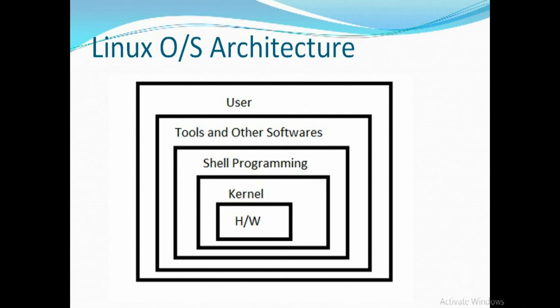Let's observe the Linux operating system architecture. We can see hardware, then kernel, shell, programs, tools, and other software, and finally the user. The hardware is controlled by the kernel. The kernel is an interface software between the user and hardware that controls the hardware. The shell takes a list of commands from the user and communicates with the kernel to interact with the hardware.